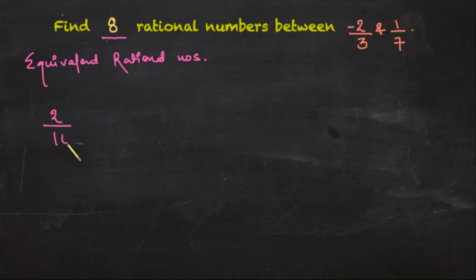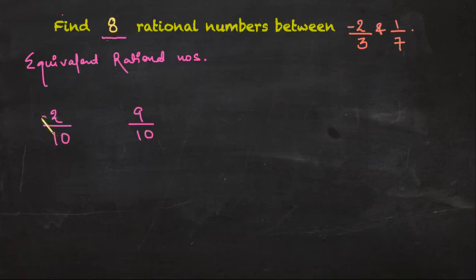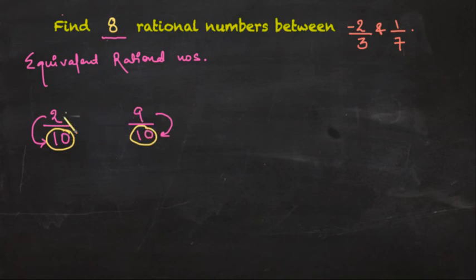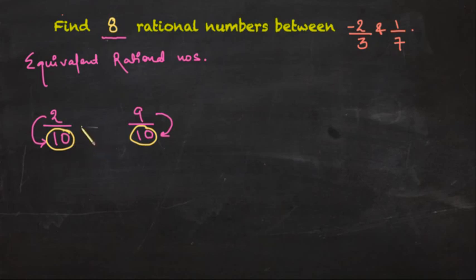Let's say that we have two upon ten as one rational number and nine upon ten as the other. Two upon ten means two parts out of ten parts, and nine upon ten means nine parts out of ten parts. Since the denominators are the same — both are ten — it is easy for us to identify what we are talking about. If I ask you to write some rational numbers between them, I can easily say three upon ten would lie between two by ten and nine by ten.